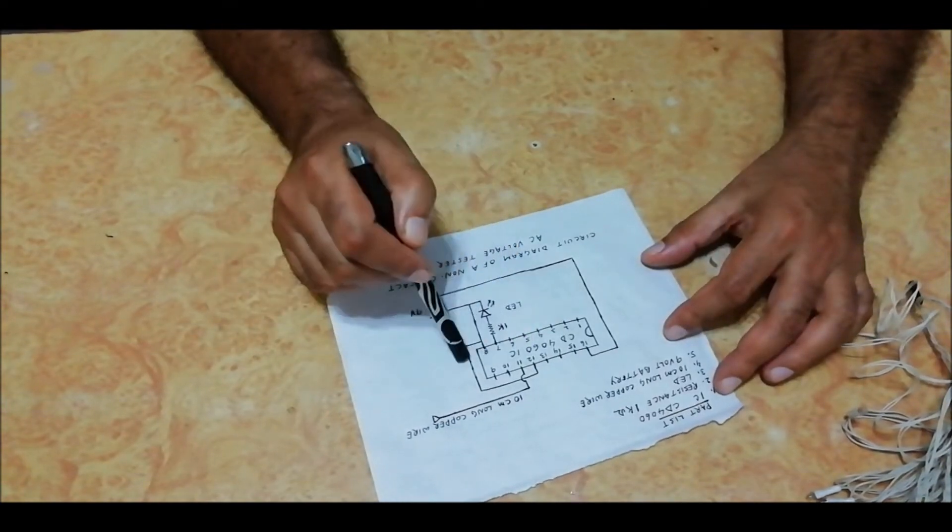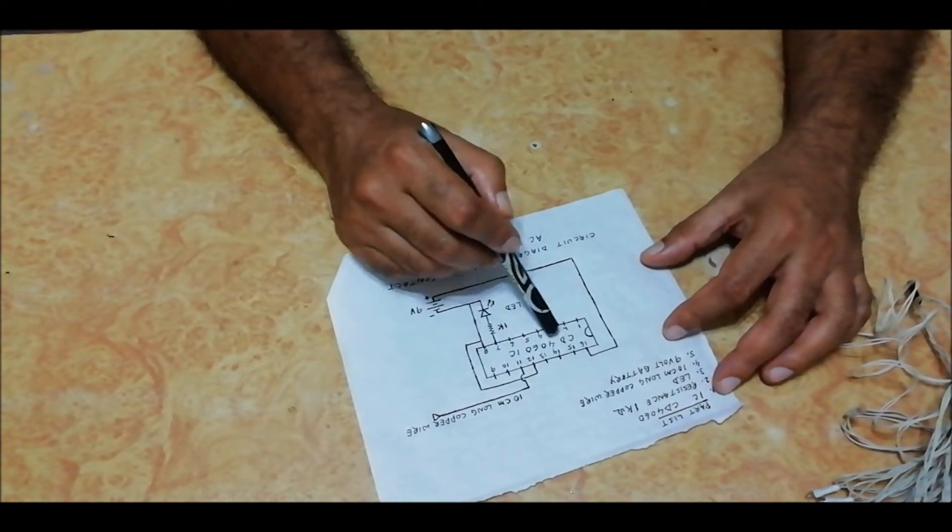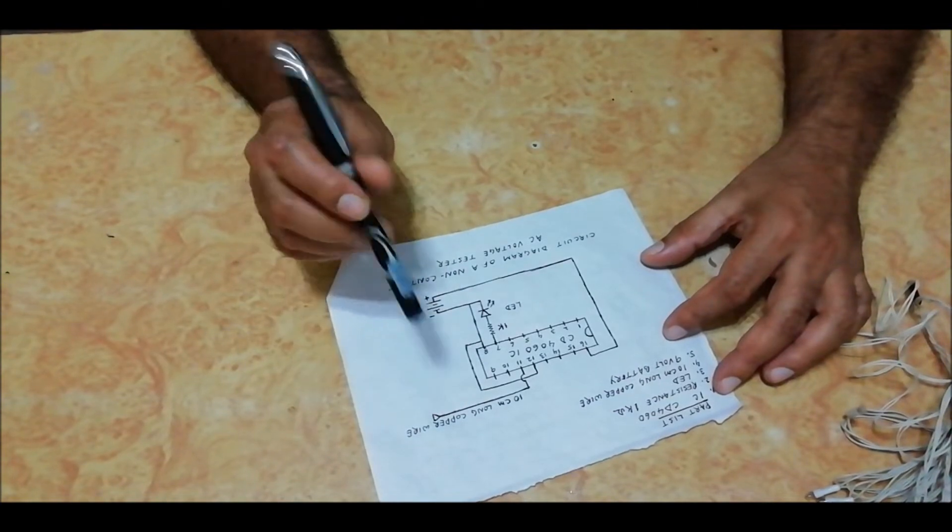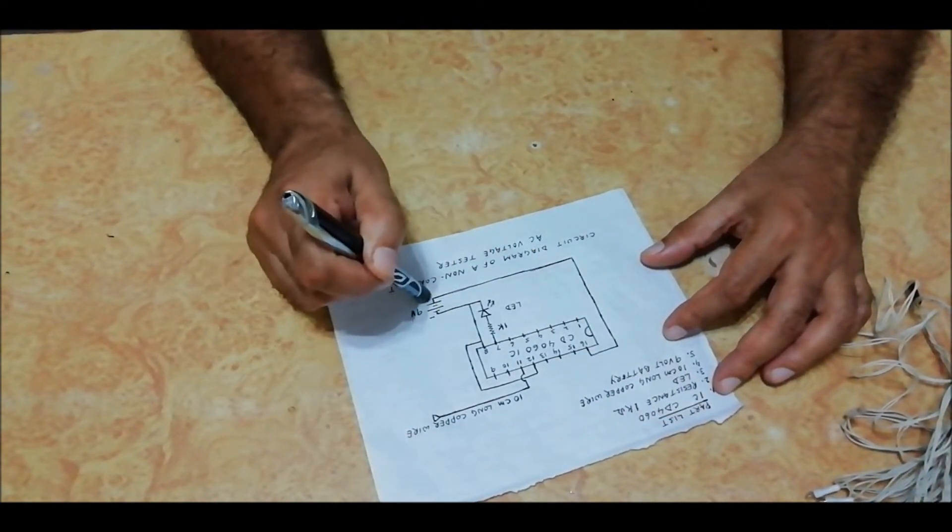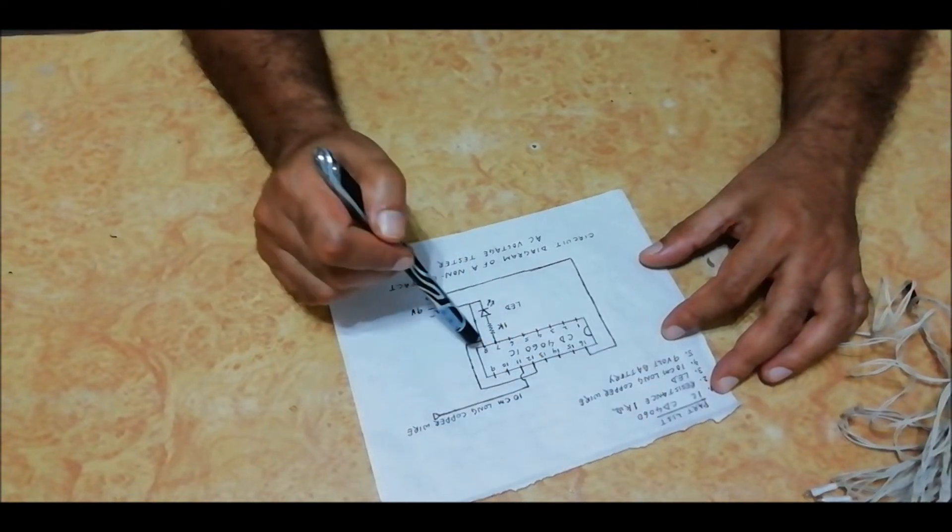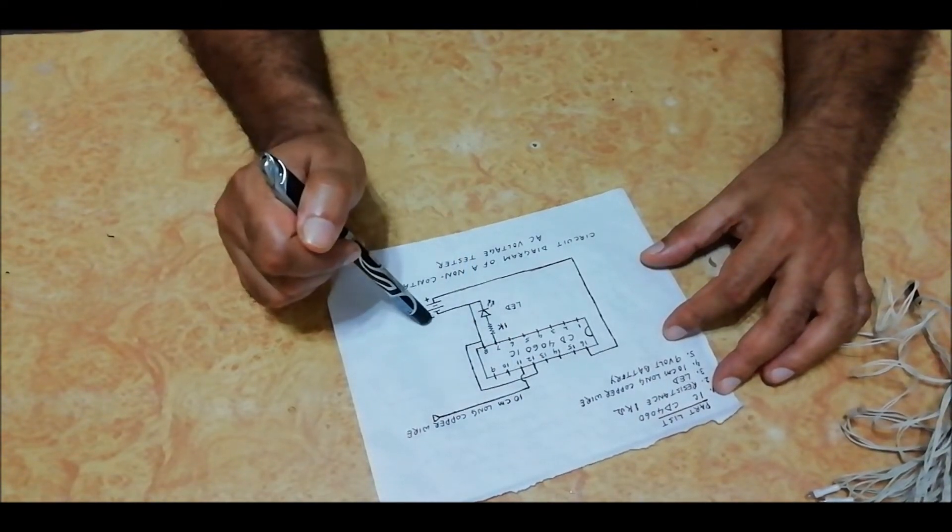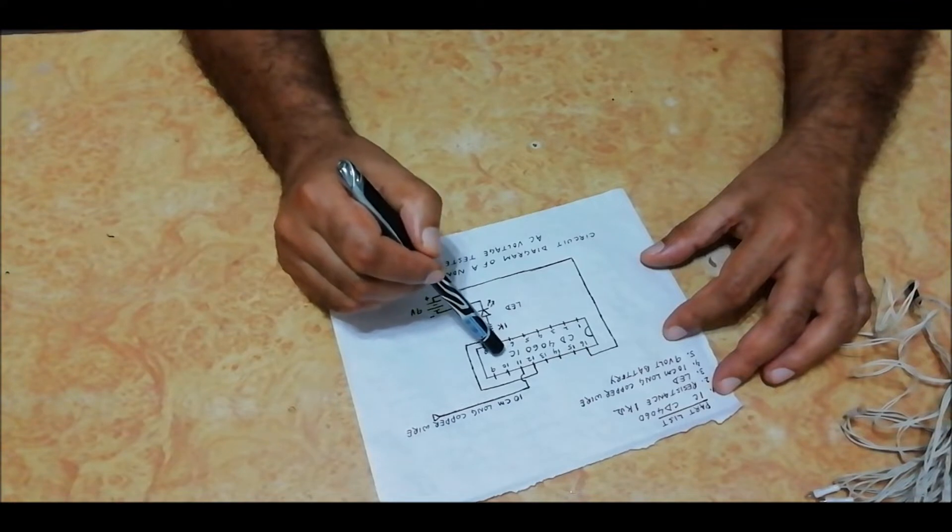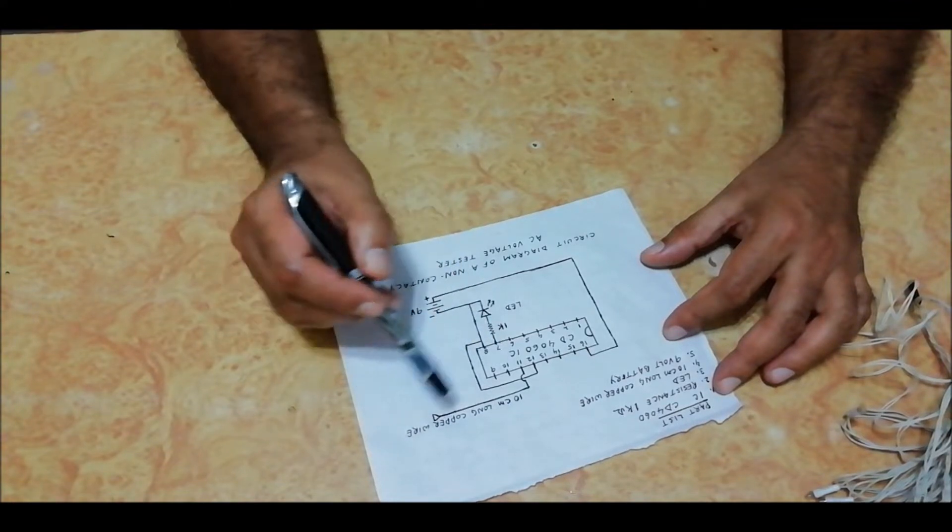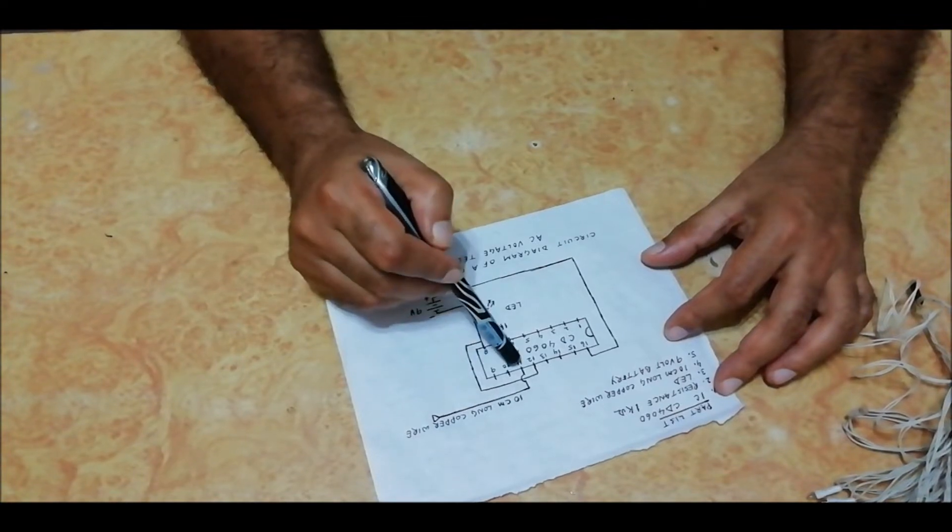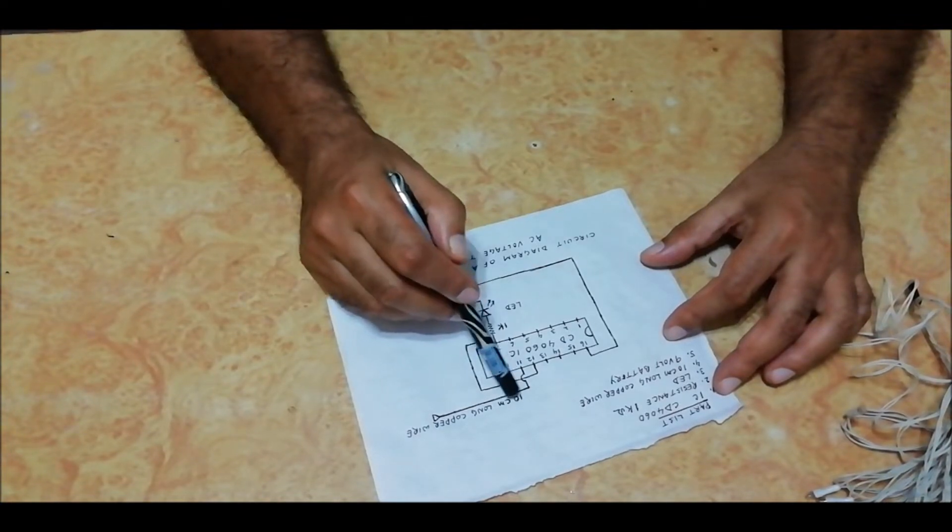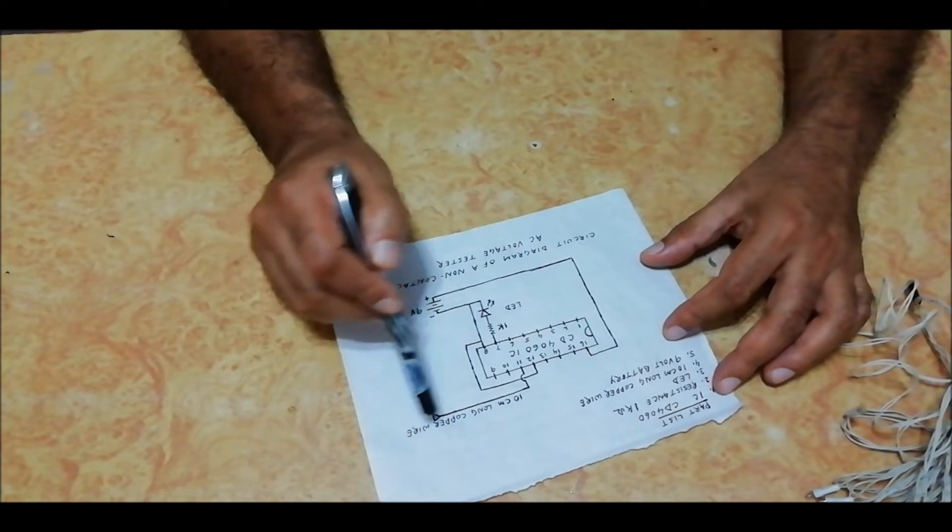You can see from the circuit diagram the IC CD4060 is a 16 pin IC. Pin number 16 is connected to positive terminal of battery. Pin number 12 and 8 are connected to negative terminal of battery. We get the output from pin number 7 with 1 kilo-ohm resistance and an LED. In pin number 11, a 10 centimeter long copper wire is connected as an antenna.